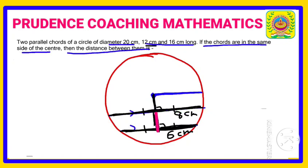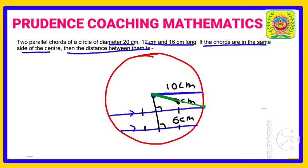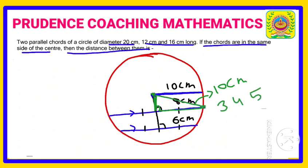We draw a line from the center to the circumference, which is also a radius of 10 centimeters. With the radius as 10 centimeters and the half-chord as 8 centimeters, we can apply the Pythagorean theorem. Using the 3-4-5 triplet: the hypotenuse is 10 (which is 5 × 2), the base is 8 (which is 4 × 2), so the perpendicular distance is 3 × 2 = 6 centimeters.